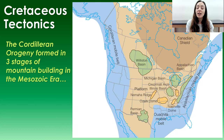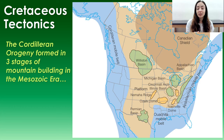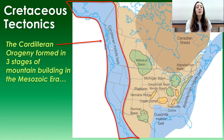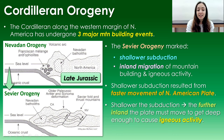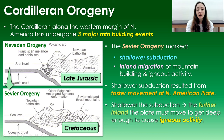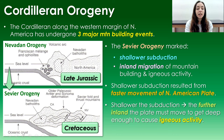Now let's move on to Cretaceous tectonics, because that's what formed the basin that the shallow seas I mentioned could fill. The Cordilleran mobile belt at the western margin of North America underwent three major mountain-building events, or orogenies. The first was the Nevadan Orogeny in the late Jurassic, and the second was the Sevier Orogeny in the Cretaceous — which is what we'll focus on.